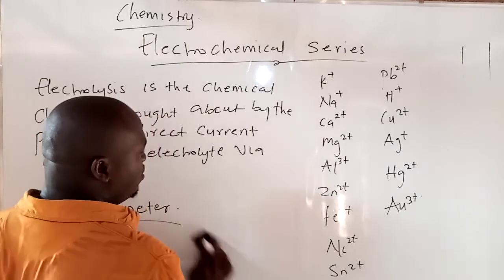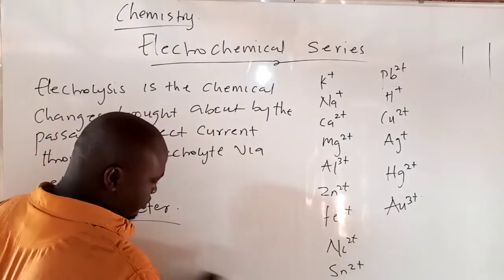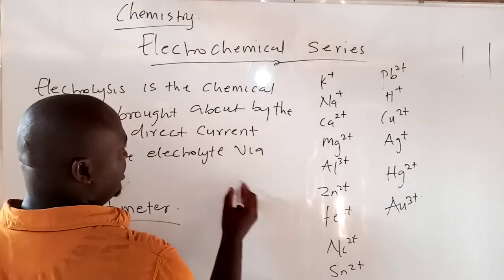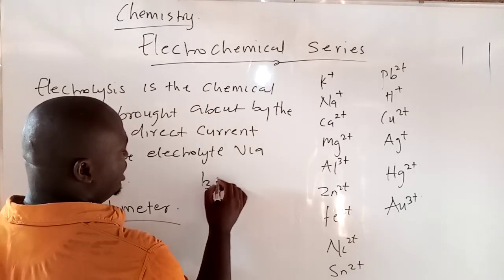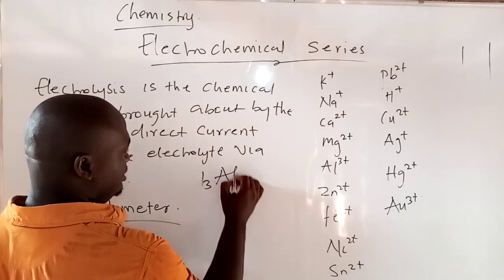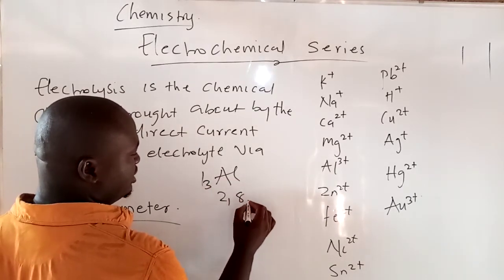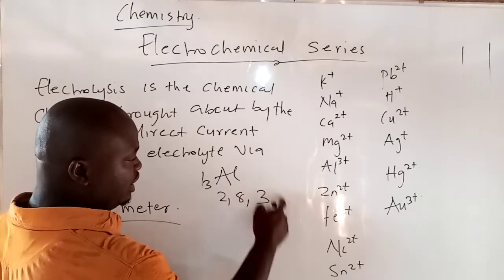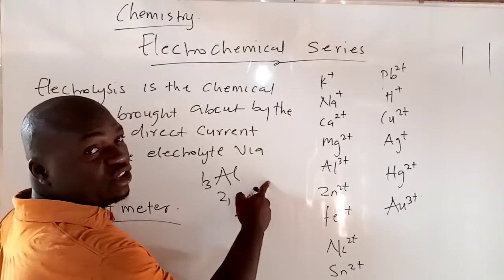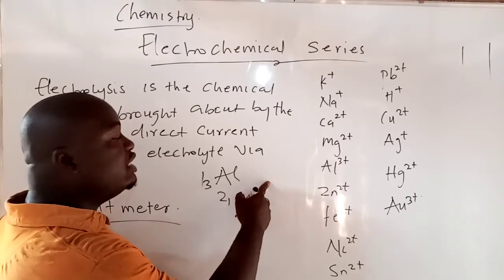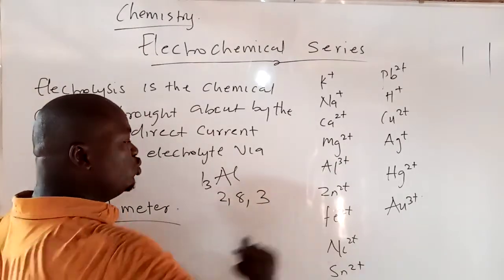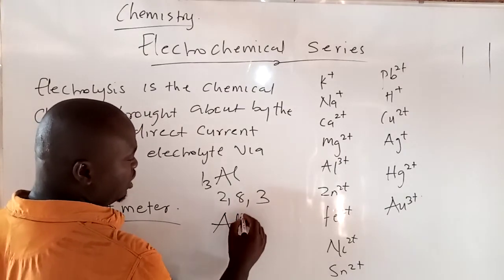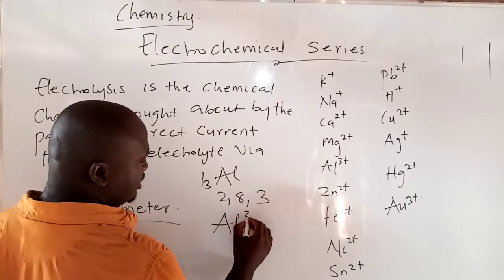For example, aluminium is number 13, so you have 2, 8, 3. It has to lose the three electrons because nobody is going to give it five electrons. So it will lose three electrons to become more stable. That is why we write aluminium as Al³⁺.